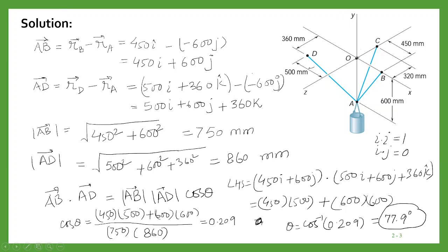So this is how we can use the dot product of two vectors to calculate the angle between them. This is all for this problem. I hope now you can solve these types of problems. Thanks for watching. Have a nice day.